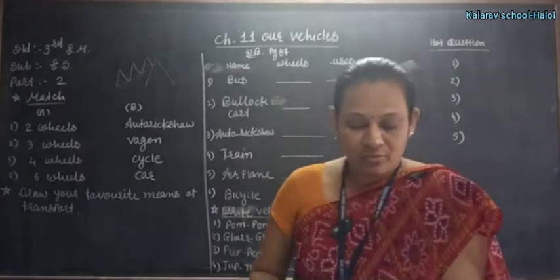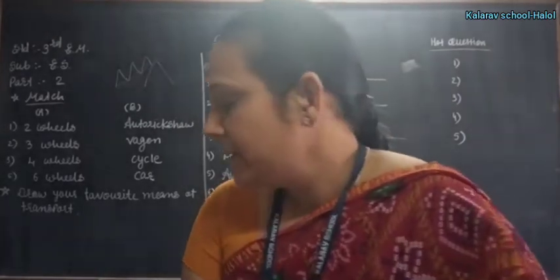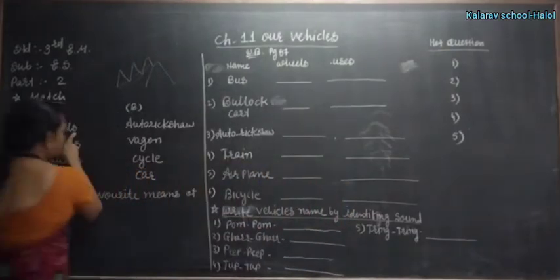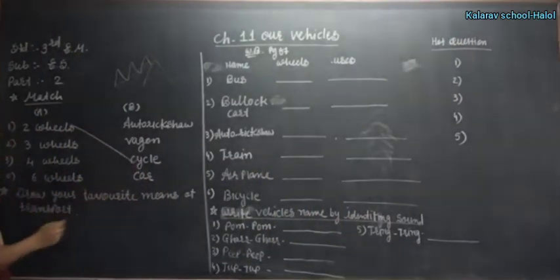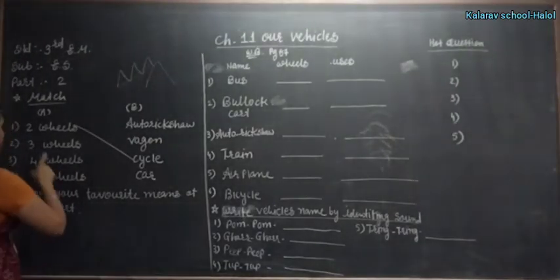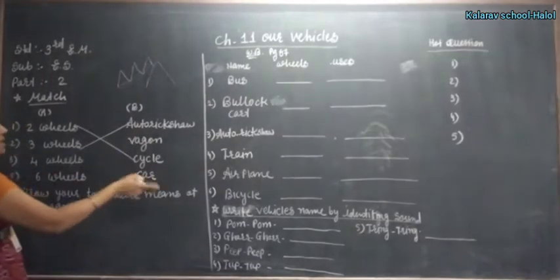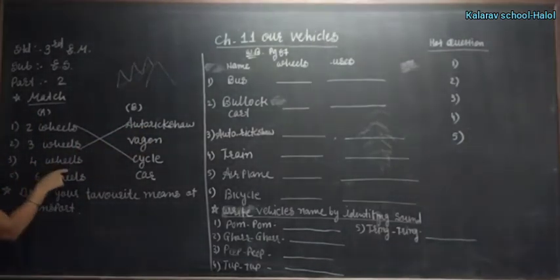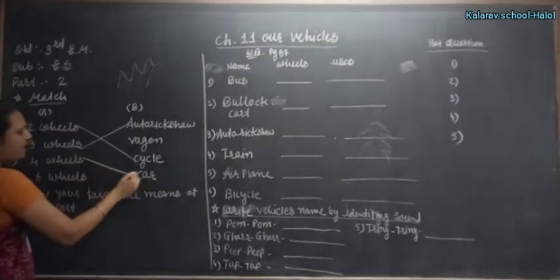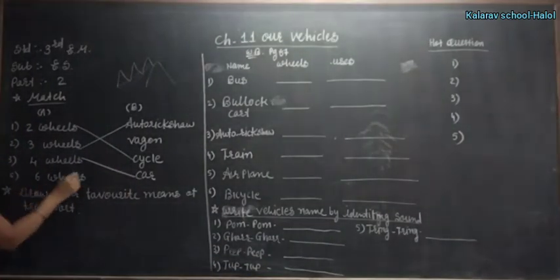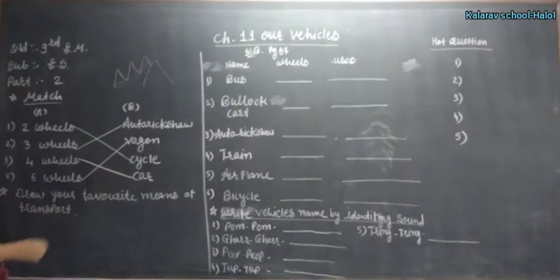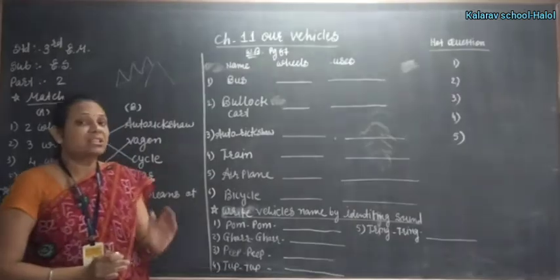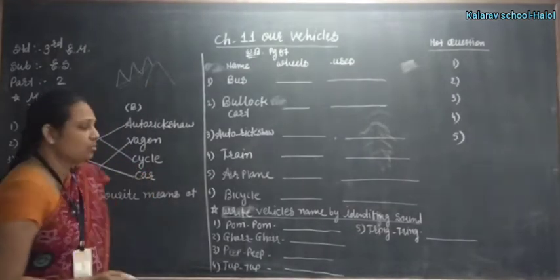Now we see the CW part. Match the following. Two wheels? Who has two wheels? It is the cycle. Three wheels? Auto rickshaw. Here auto rickshaw is not given, also tricycle. Four wheels? This is the car and bus has four wheels. Six wheels? It is the wagon. You see children, it is the wagon, one type of big truck. The wagon has six or eight wheels. This is used to carry heavy loads.